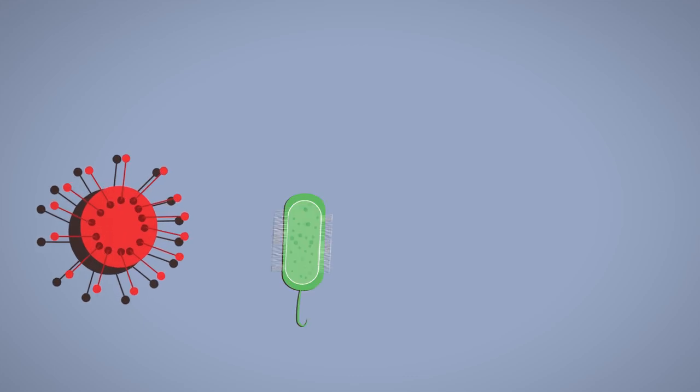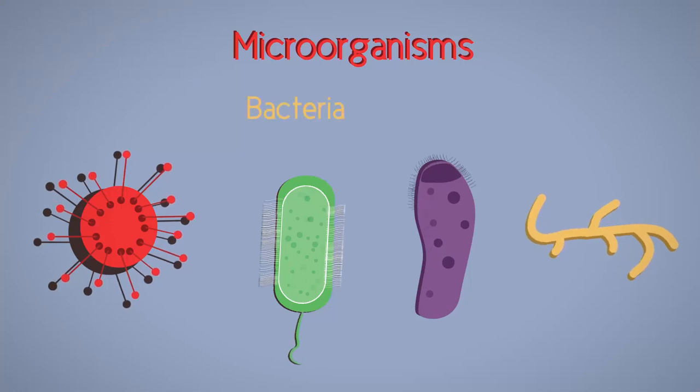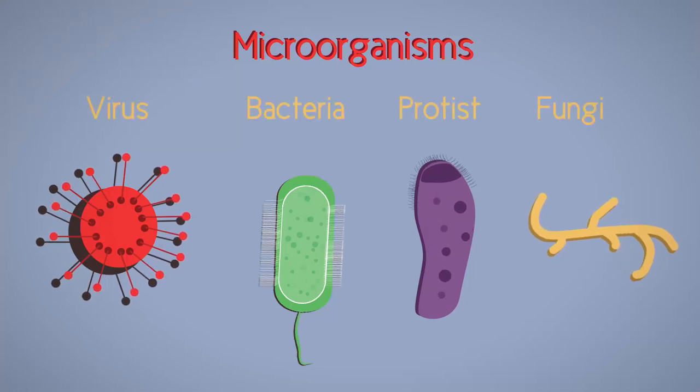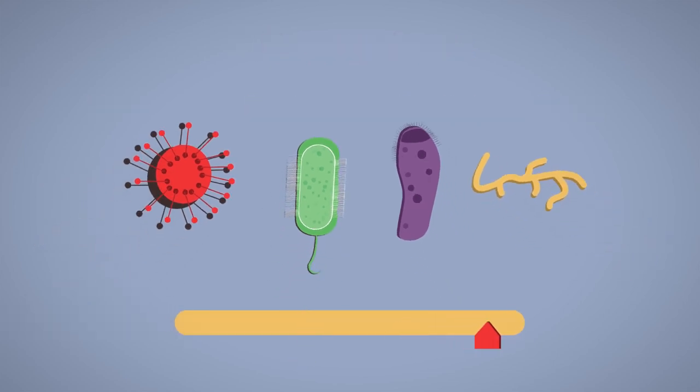You can learn more about vaccinations in our what are vaccinations video. From this video you should know that pathogens are disease-causing microorganisms and can be bacteria, virus, fungi, or protist. They are transmitted in many different ways, and depending upon their mode of transmission determines how they can be controlled.